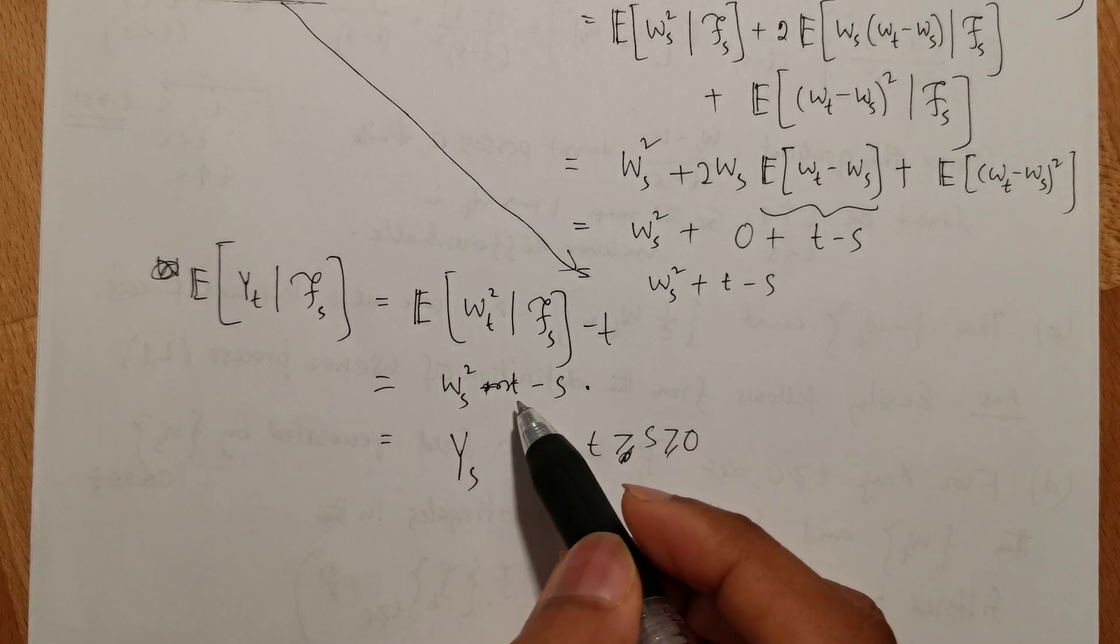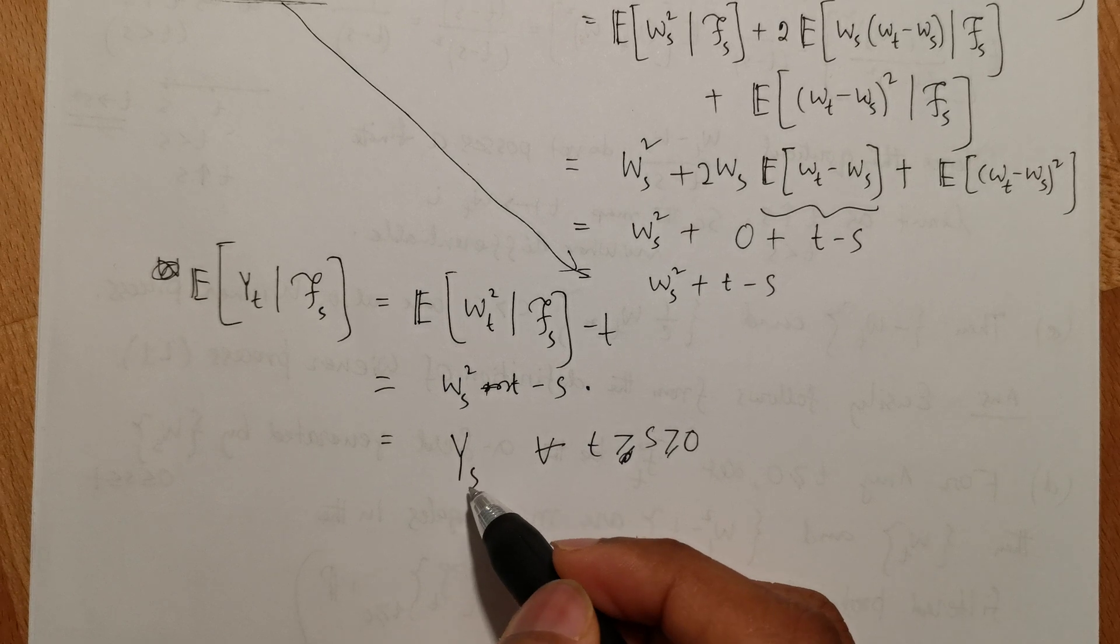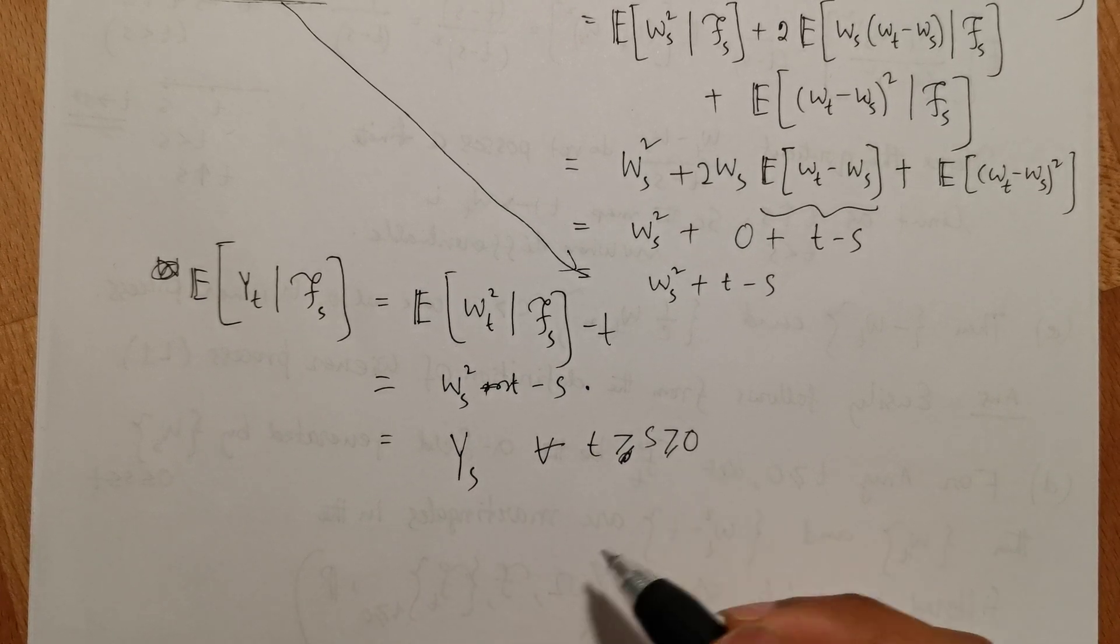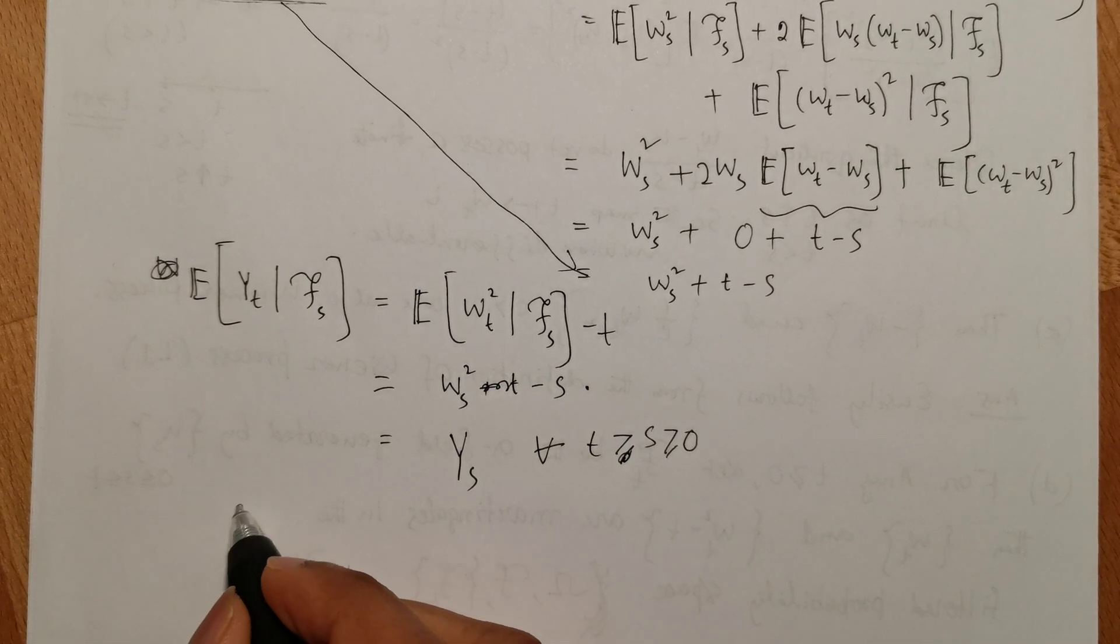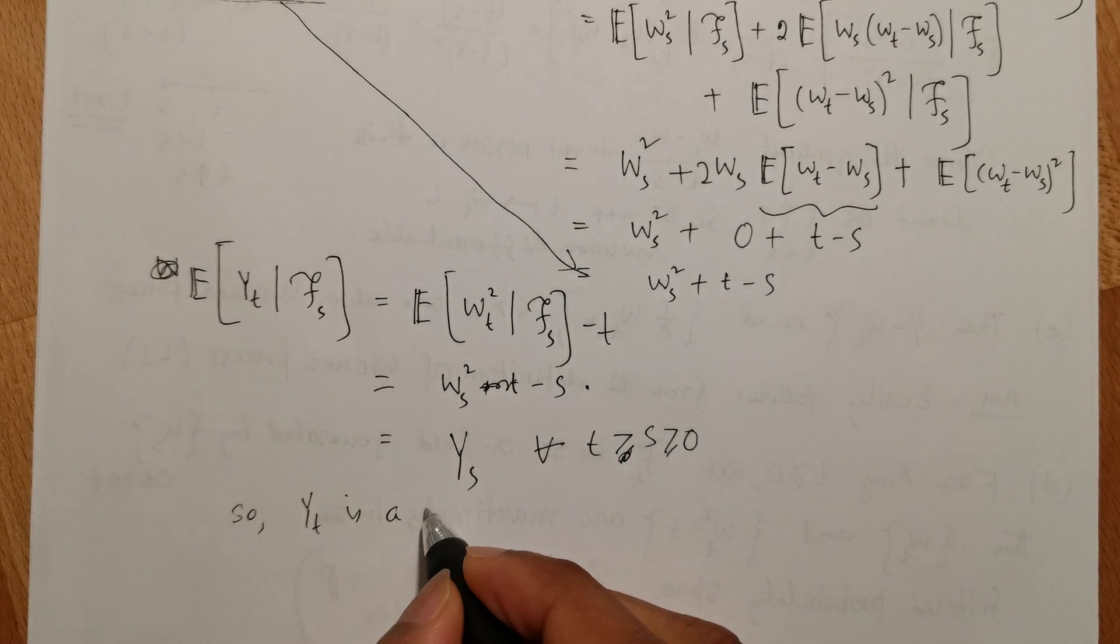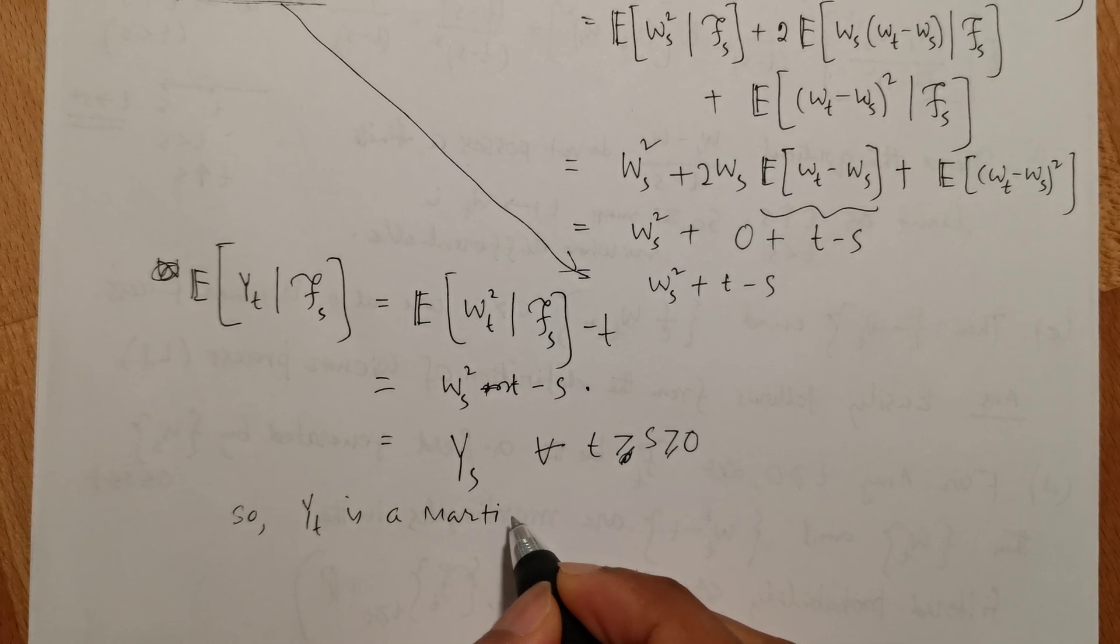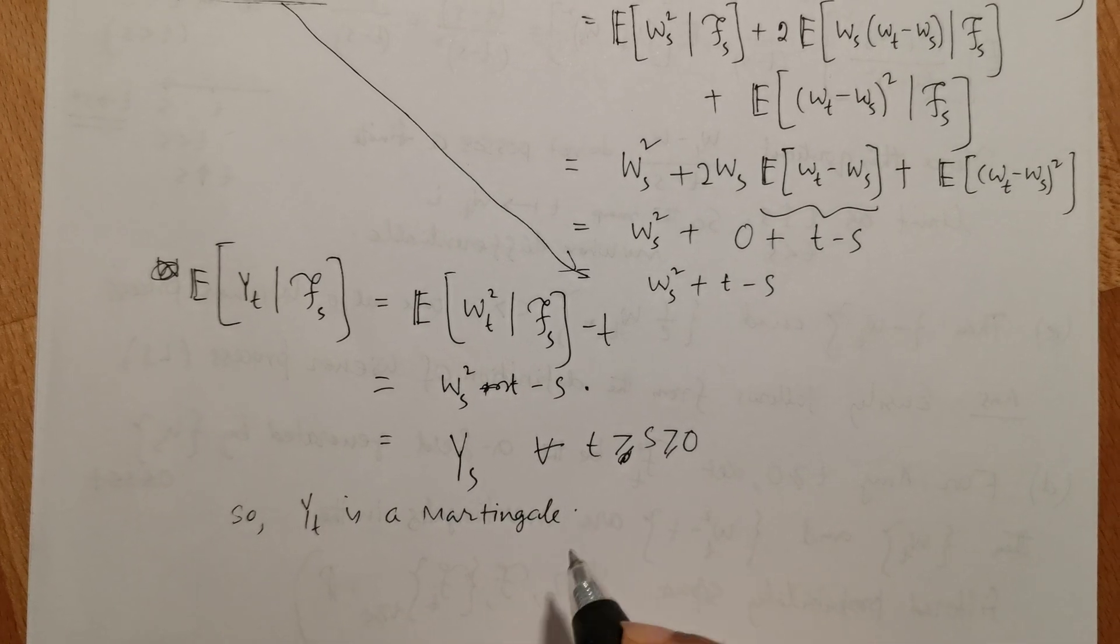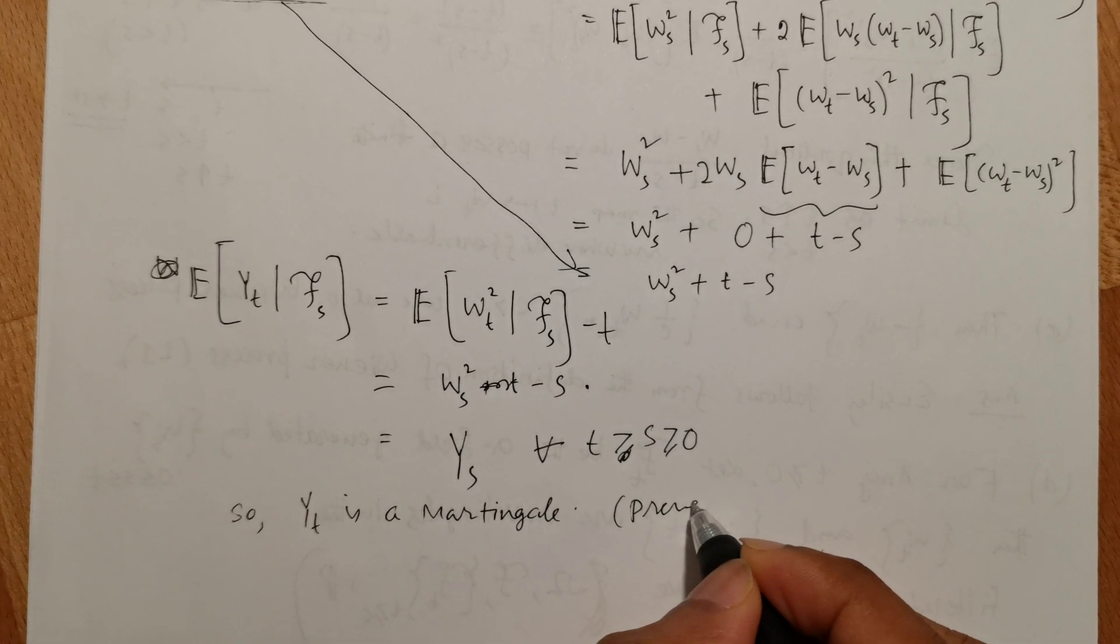So this is y plus square s minus s is equal to ys for all t greater than s greater or equal to 0. So yt is a martingale.